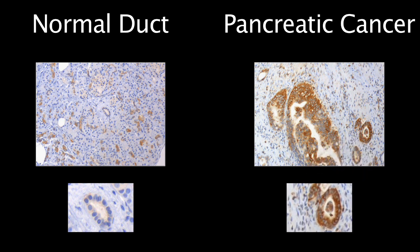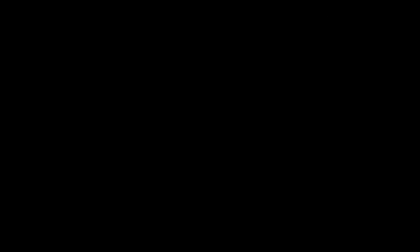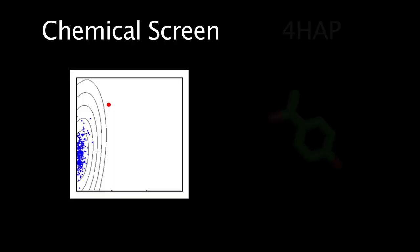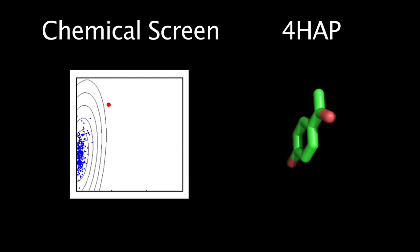We now consider this protein and others like it to be potential targets for future anti-cancer drugs. In fact, we've had a molecule called 4-HAP that works on one of these proteins and we're already testing its ability to fight cancer.